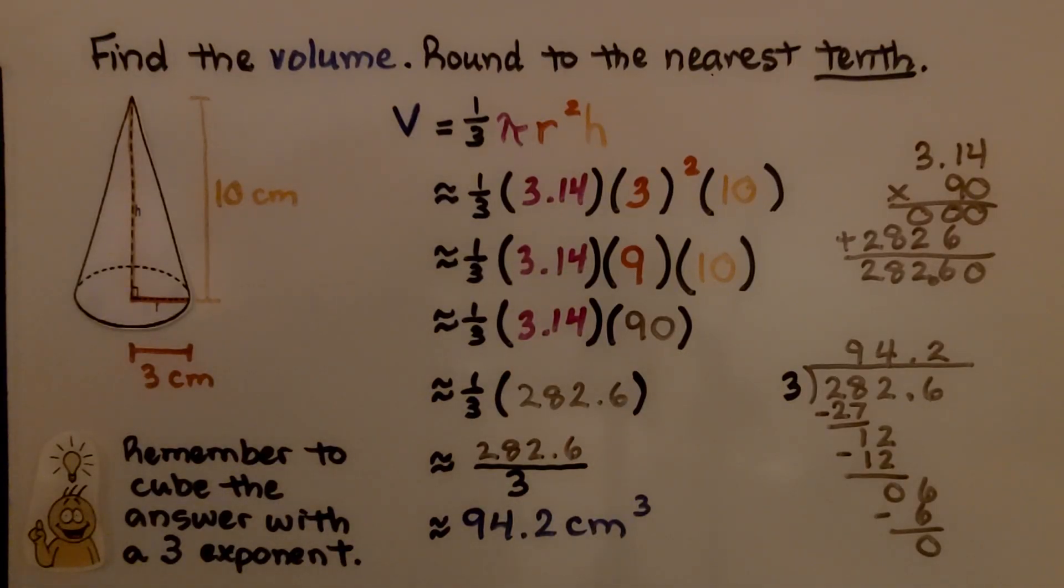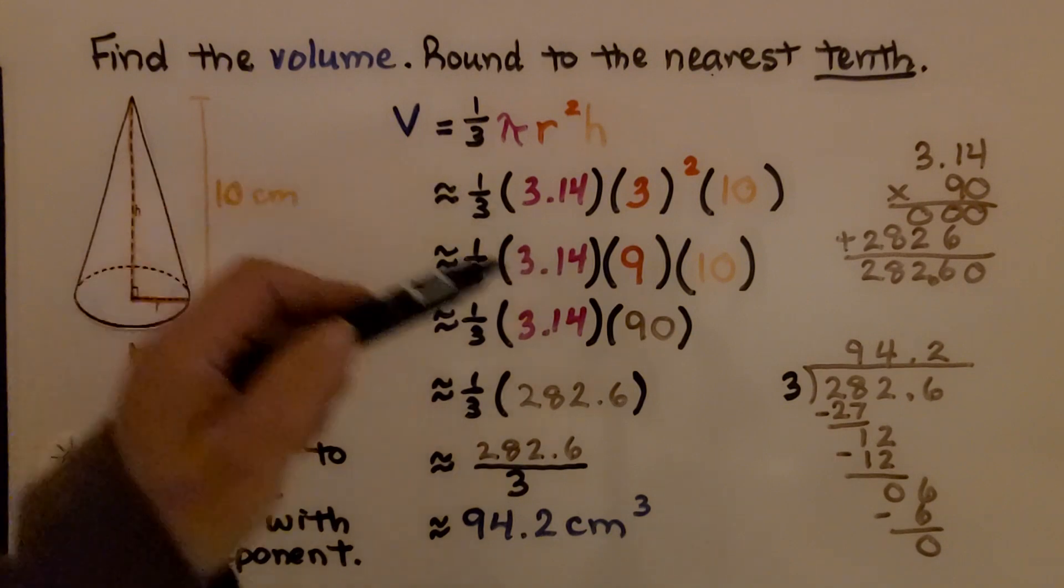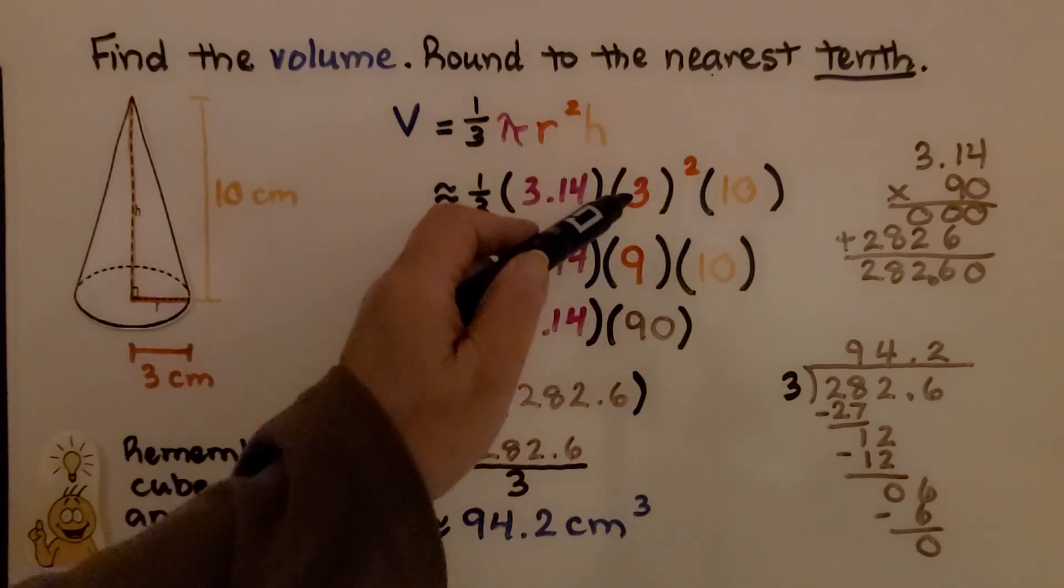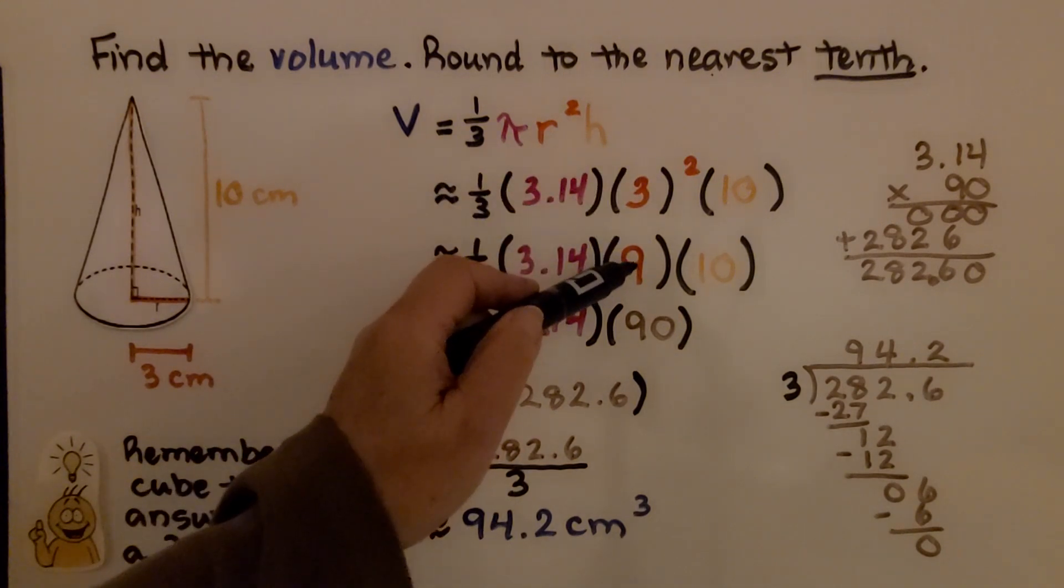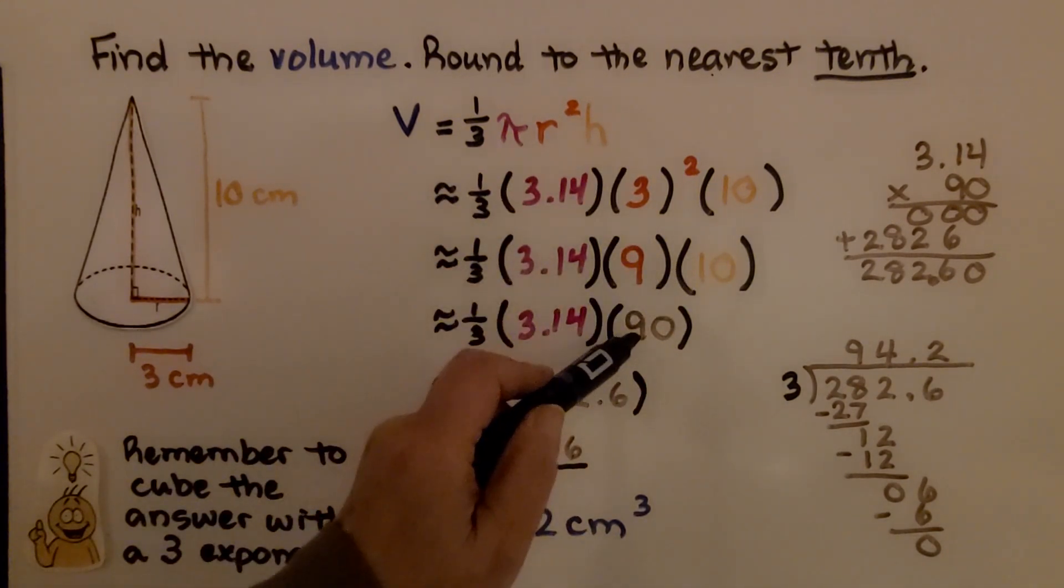Again, we need to find the volume and round to the nearest tenth. We see the height is 10 and the radius is 3 centimeters. We put it into the formula. Here's our height 10 and our radius 3 centimeters. We square that and get 9. Now we can do 9 times 10, which is 90.